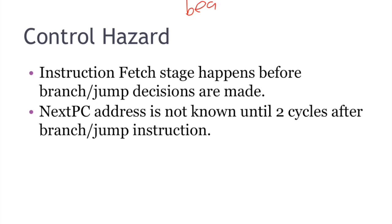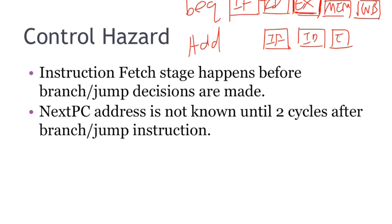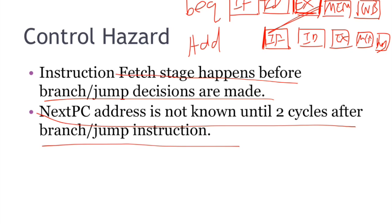So say if we have a branch instruction, you will have five stages. And let's assume that branch logic is done in the execution stage. So if we have an instruction follow the branch instruction, let's say add. We see that the instruction fetch stage happens before the branch and jump decisions are made. So now we have a hazard. We cannot fetch any instruction until the branch comparison is done. And the next PC address is not known until two cycles after the branch or jump instruction, if we assume that the branch logic is in the execution stage.